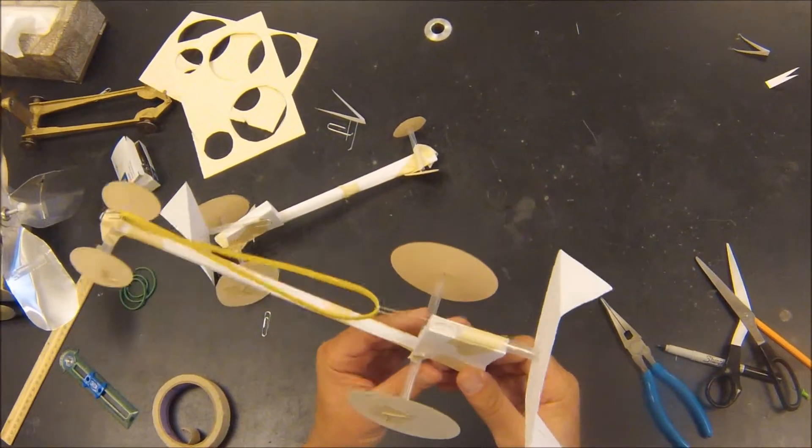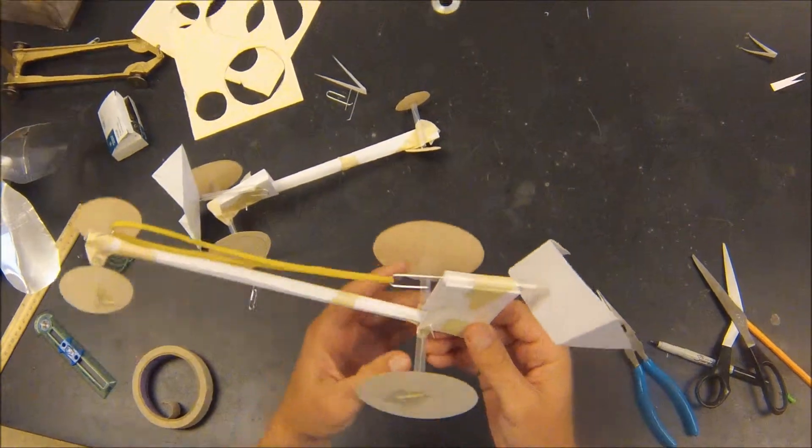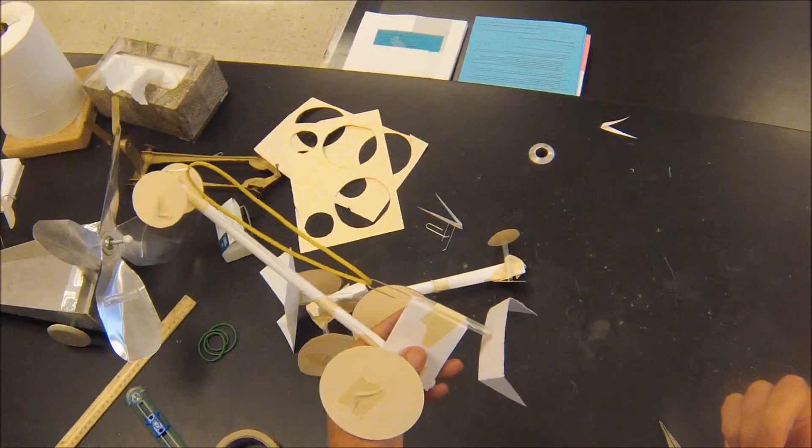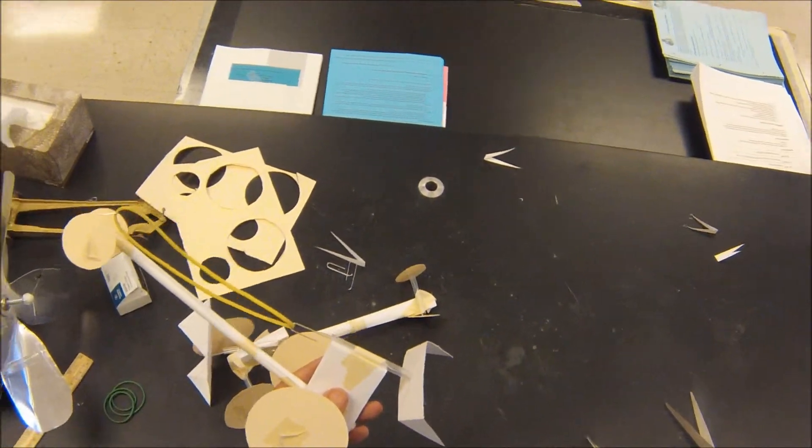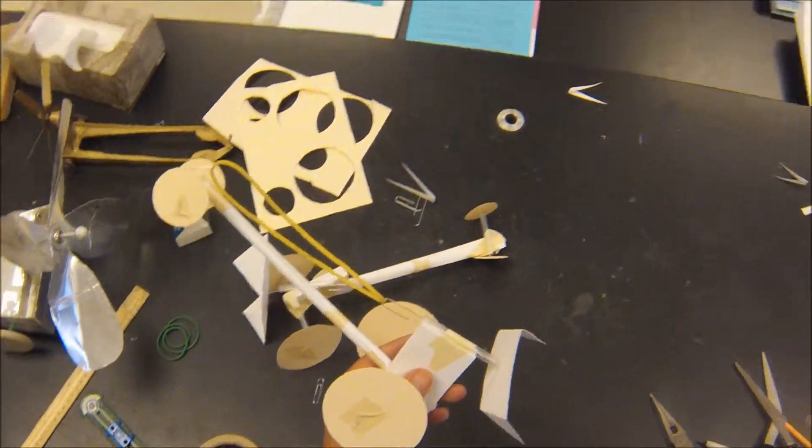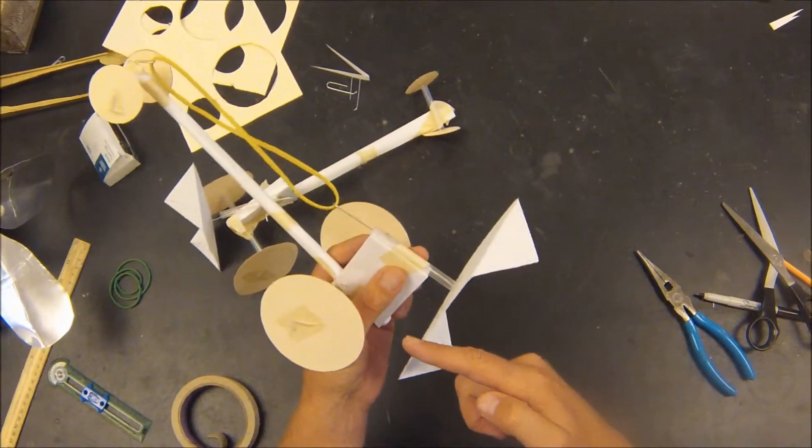To be consistent and to make a fair test, if we all choose 75 times and you choose 75 times each time, you'll know if you change your wheels and you wind it up 75 times and it goes twice as far, well you know that your wheels improved your car. If it doesn't go as far, then you know it didn't improve your car.